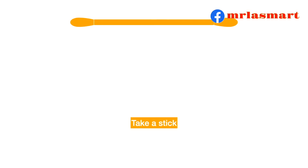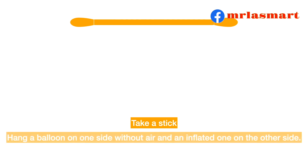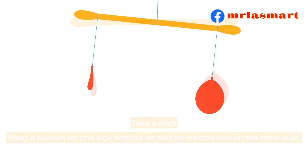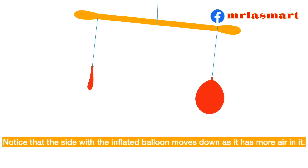Air has weight. Take a stick. Hang a balloon on one side without air and an inflated one on the other side. Notice that the side with the inflated balloon moves down, as it has more air in it.